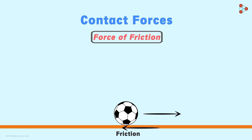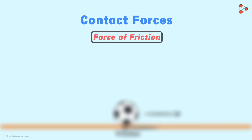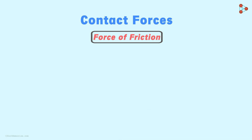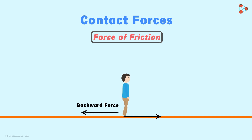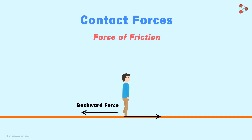Friction plays quite an important role in our daily life. We can walk and run because of friction. When we walk forward, we push the ground with our foot in the backward direction. In return, the ground exerts a force in the forward direction which moves us forward. The force that the ground exerts is nothing but the force of friction.